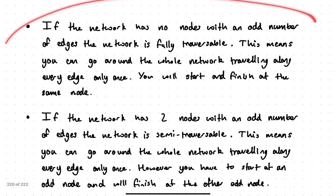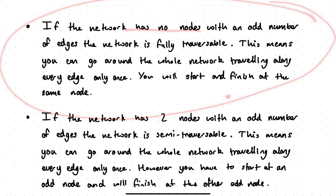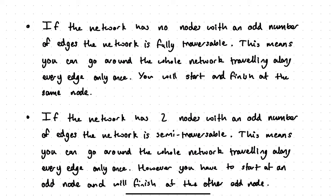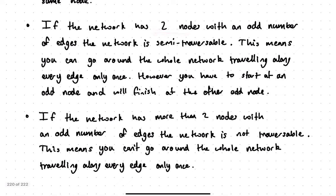So that gives us three statements. If the network has no nodes with an odd number of edges, the network is fully traversable — you can go around the whole network travelling along every edge only once, and you'll start and finish at the same node. If the network has exactly two nodes with an odd number of edges, the network is semi-traversable — you can travel the whole network along every edge only once, but you must start at an odd node and finish at the other odd node. If the network has more than two nodes with an odd number of edges, the network is not traversable — you cannot go around the whole network travelling along every edge only once.